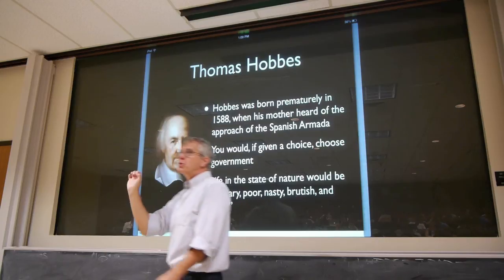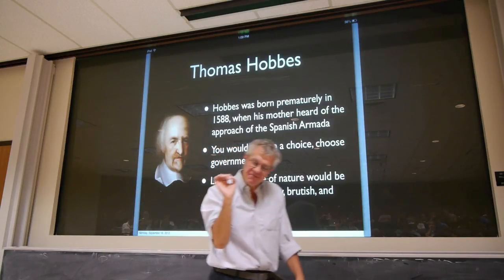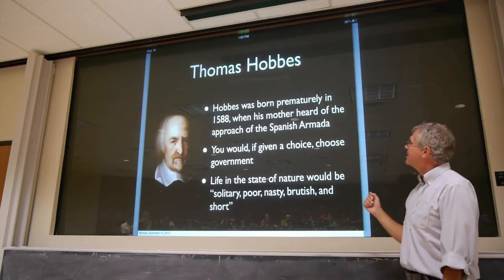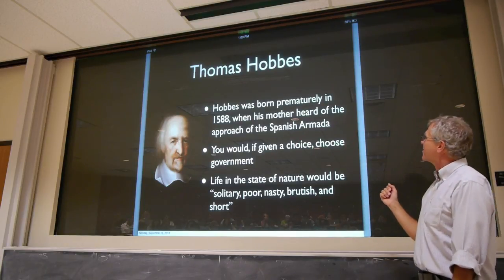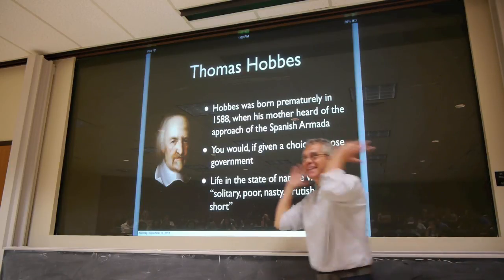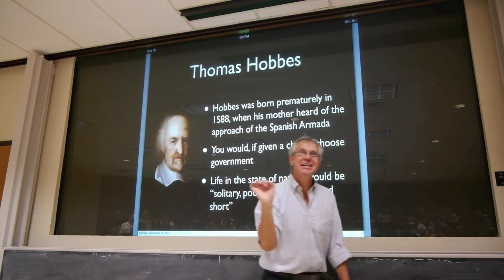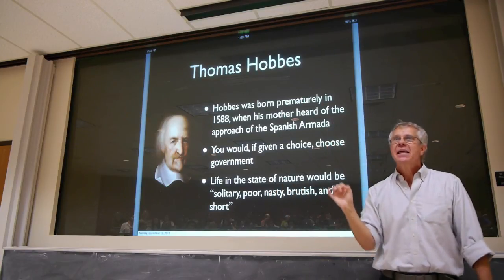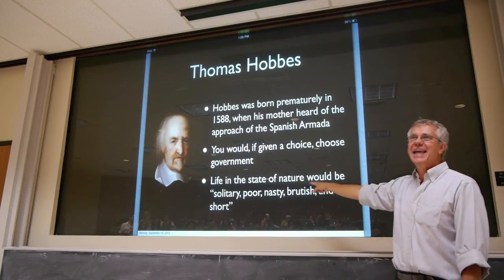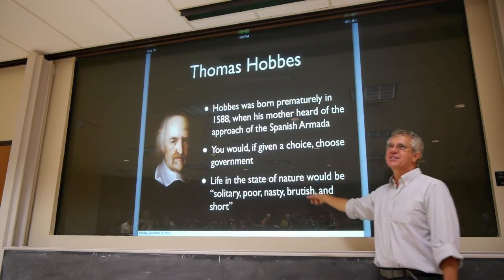The originator of social contract theory is Thomas Hobbes, and he gives one of the most famous characterizations of this. He was born prematurely in 1588 when his mother heard of the approach of the Spanish Armada. 'Fear and I were born twins,' he said. And that does capture his idea of what the state of nature would be like. He famously says it would be solitary, poor, nasty, brutish, and short — life in the state of nature, that is.